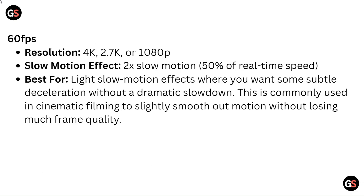At 60 fps, the available resolutions are 4K, 2.7K, or 1080p, giving a 2x slow motion effect at 50% of real time speed. This is best for a light slow motion effect where you want subtle deceleration without a dramatic slowdown. This is commonly used in cinematic filming to slightly smooth out motion without losing much frame quality.